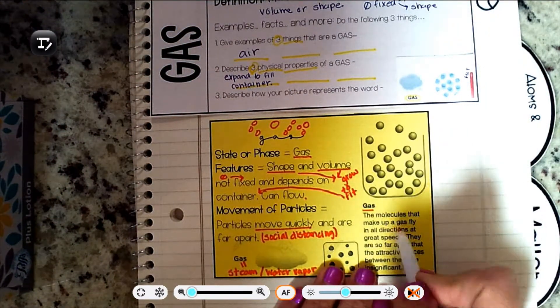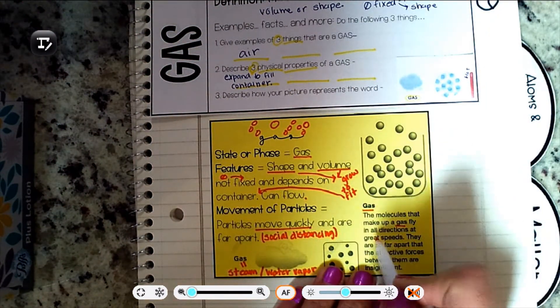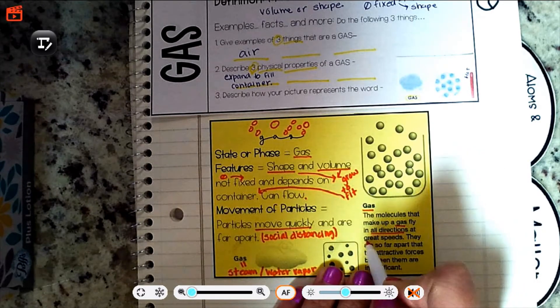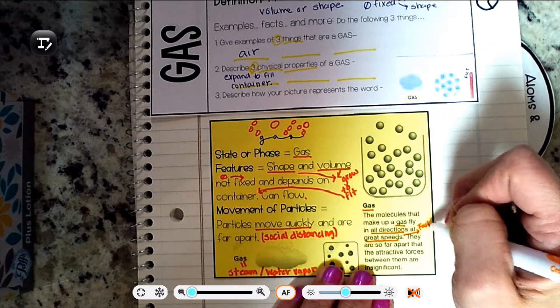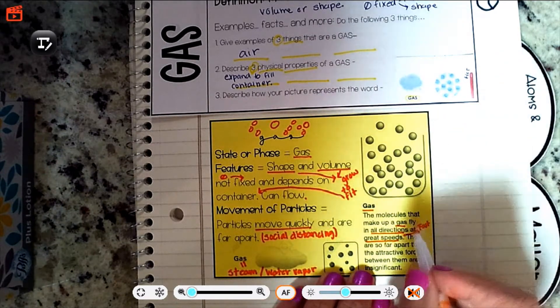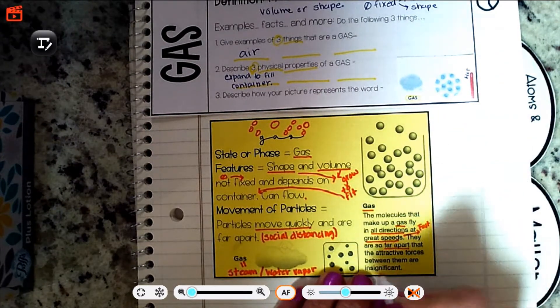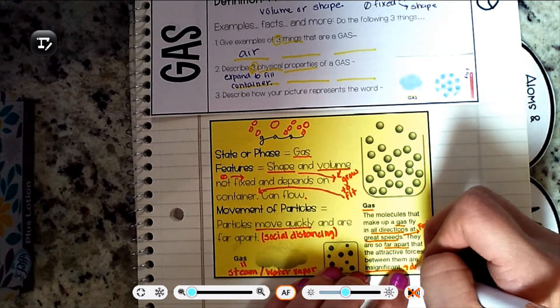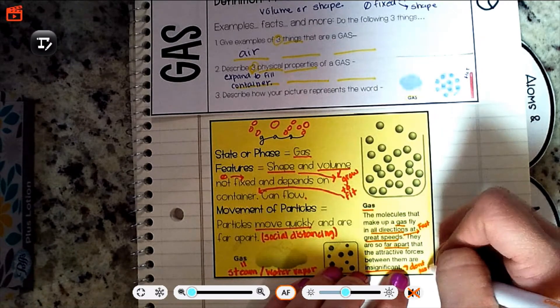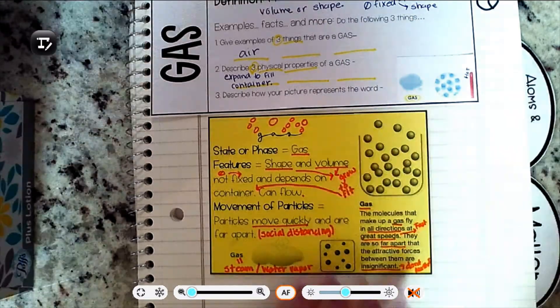A gas, the molecules that make up a gas fly in all directions and at great speed. Great speeds means fast. They are so far apart, the attractive forces between them are insignificant. That means they don't matter. Ha-ha, they don't matter.